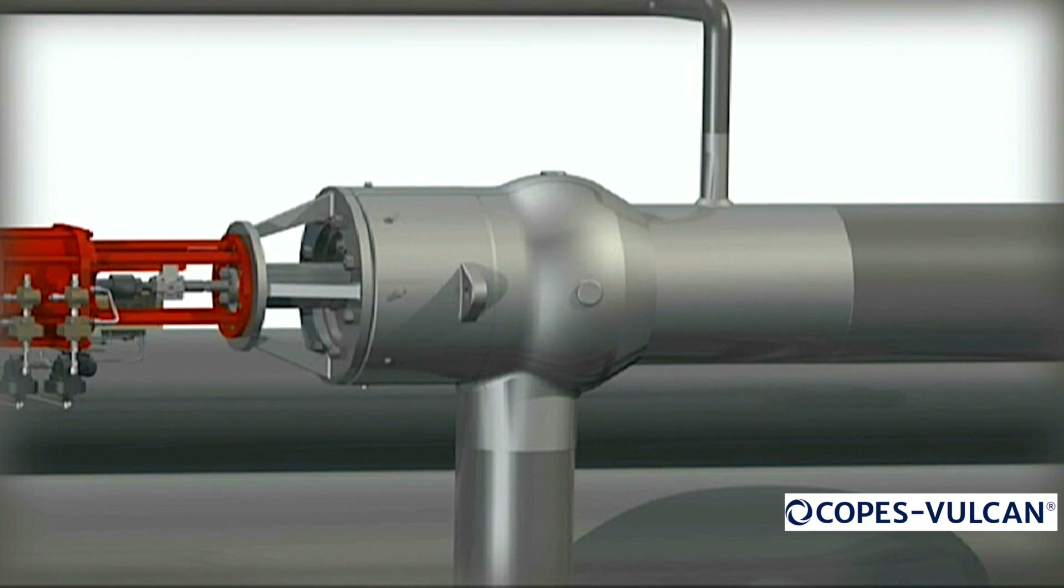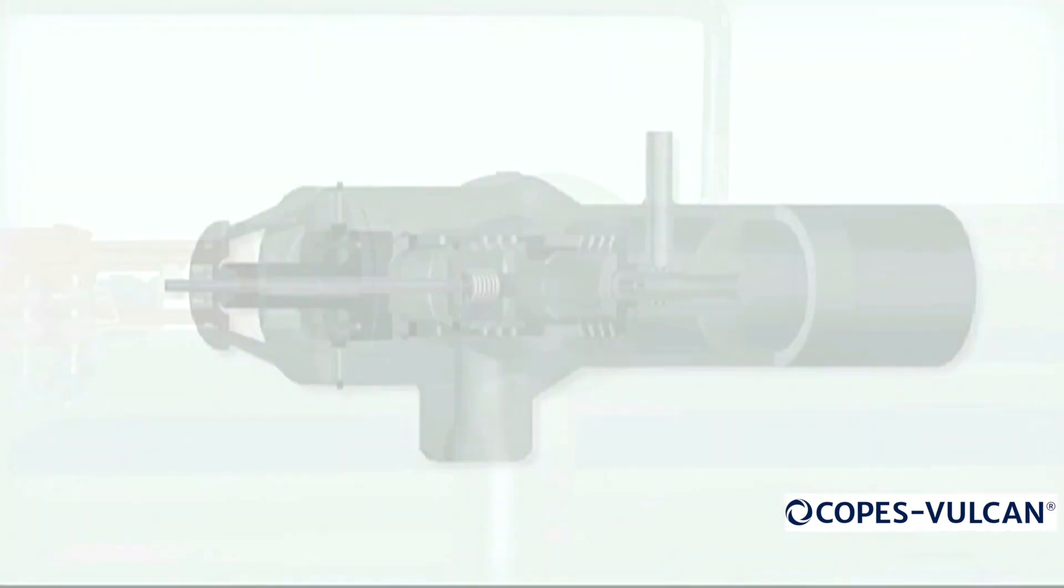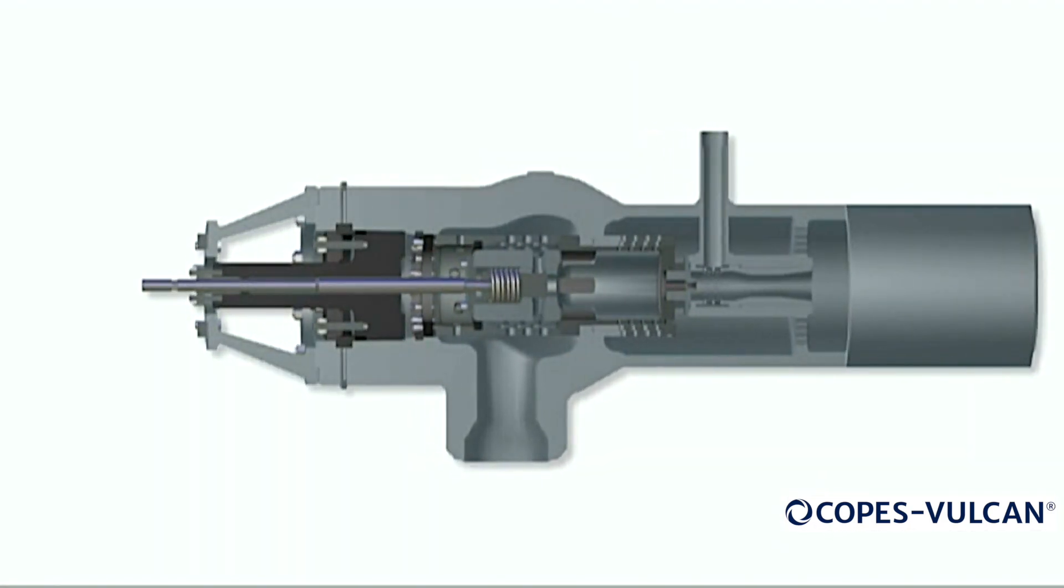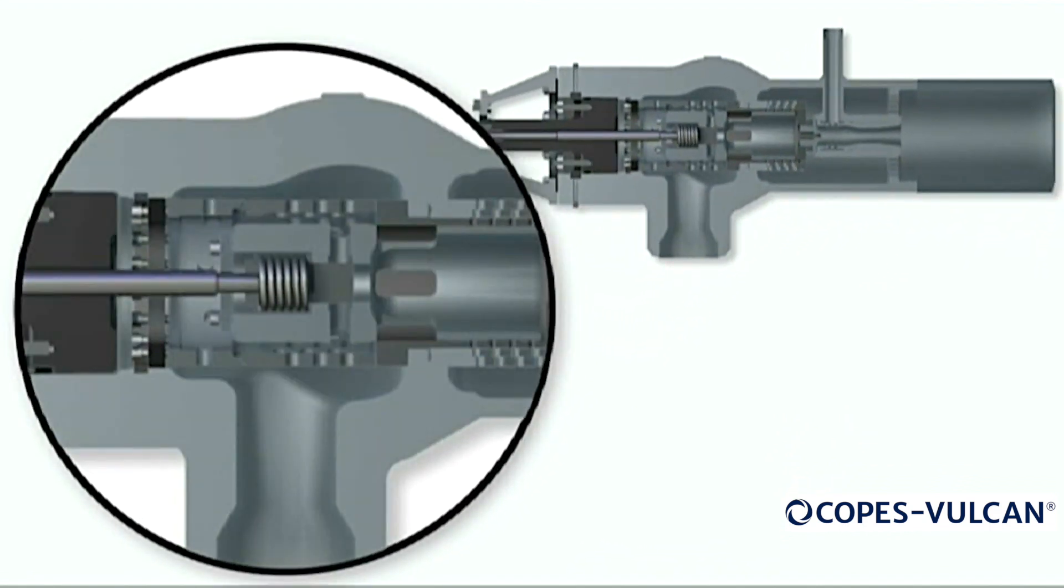The Copes Vulcan DSCVSA turbine bypass valve has evolved over many years to be at the forefront of today's thermodynamic engineering in steam conditioning. The DSCVSA steam turbine bypass valve here is in the closed position. The main plug is fully seated and the pilot tandem plug is closed.